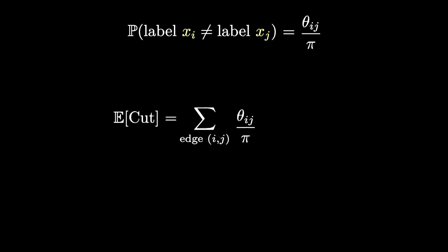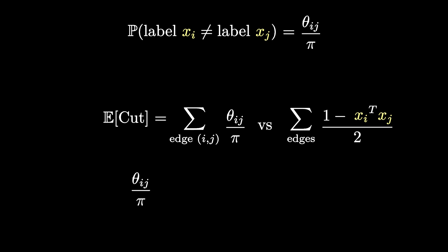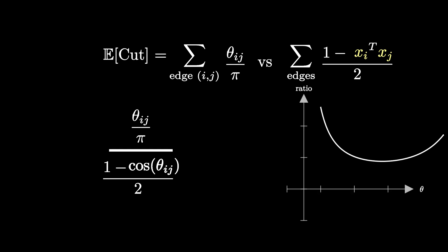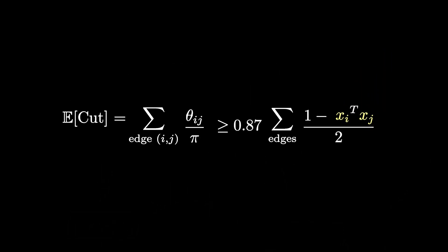The sum of these probabilities across edges is the expected value of the cut obtained by this rounding technique. How does this relate to our SDP objective? Since xi and xj are unit vectors, their inner product equals cosine of theta. So the question is: how does theta/pi relate to (1 − cos(theta))/2? Plotting this ratio as a function of theta, it has a minimum of approximately 0.87. This means the cut we get after rounding is at least 87% of the SDP objective value, which was itself a relaxation of the original MaxCut. In other words, Goemans and Williamson's method is an approximation algorithm with an approximation ratio of 87%.